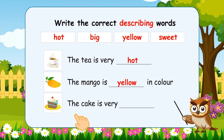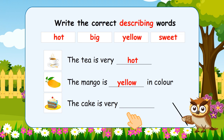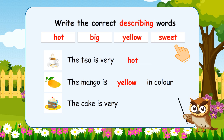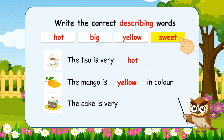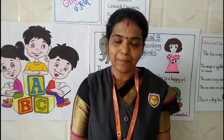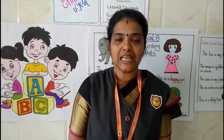The next one: the cake is very dash. What will be the answer? Is it hot? No. Is it big? No. Is it sweet? Yes, you are right — the cake is very sweet. Excellent. Take practice with whatever I am teaching in this video. Dear parents, kindly train your child by watching this video. If you have any doubt, kindly ask me — I will help you. Thank you so much. Thank you everyone.